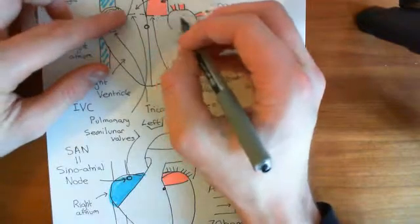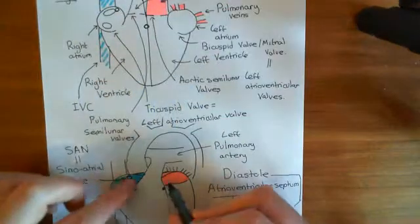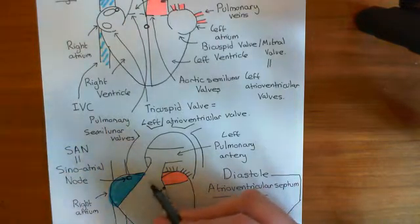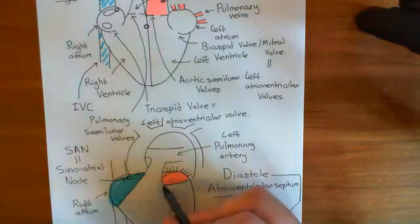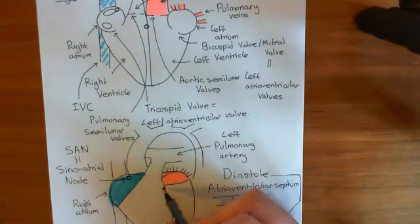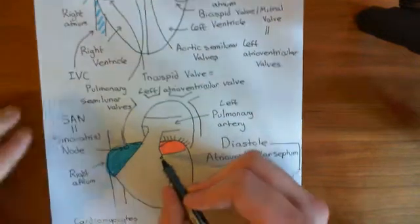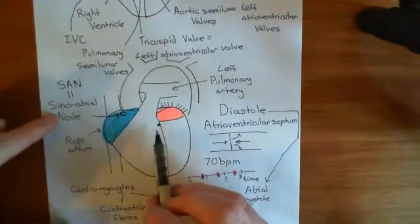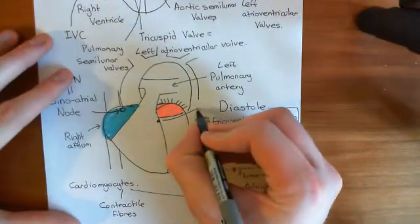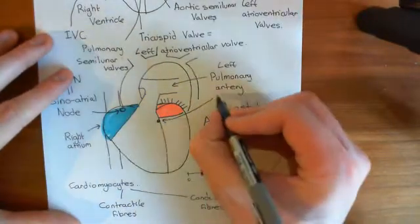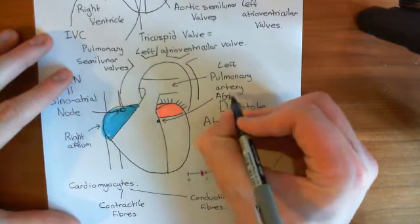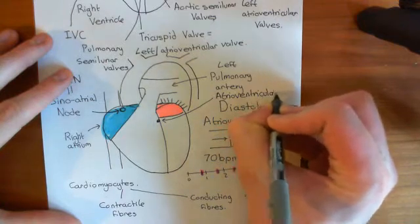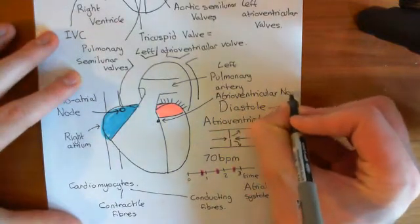The atrioventricular node connects to where the atria finish, and the action potential spreads down into a certain portion of conducting cardiomyocytes. This is the atrioventricular node — a bunch of cardiomyocytes whose function is to convey the electrical signal. It is often abbreviated to the AVN, or more commonly the AV node.